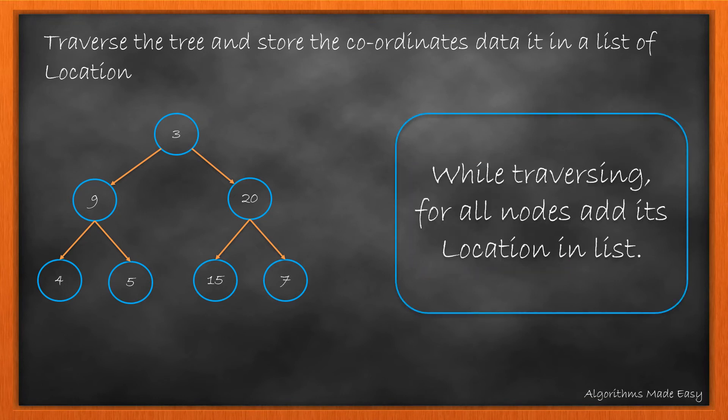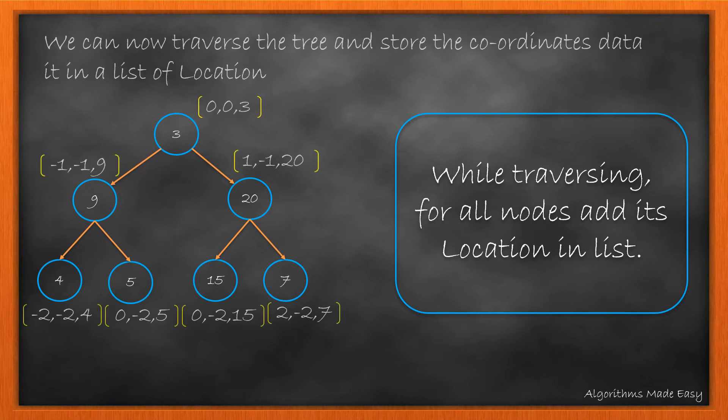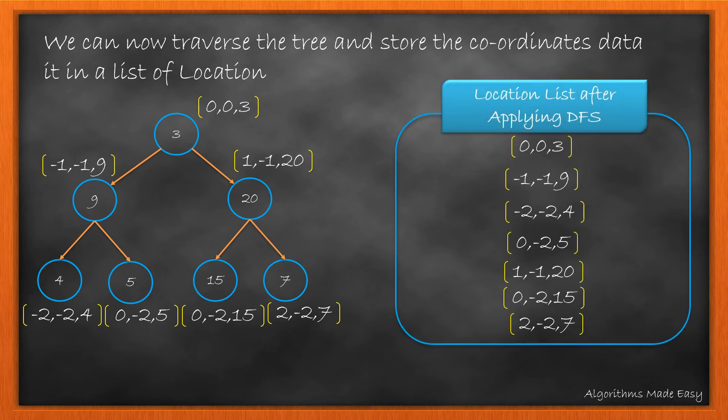While traversing, we will store the location of each node in the data structure created. So, for root node, the value of x and y will be 0,0 and the value of its child node would be in respect to the root node. The left child will have the coordinate (x-1, y-1) while the right child will have the value (x+1, y-1). This would be the value for each node. The list of location after DFS traversal will look like this.